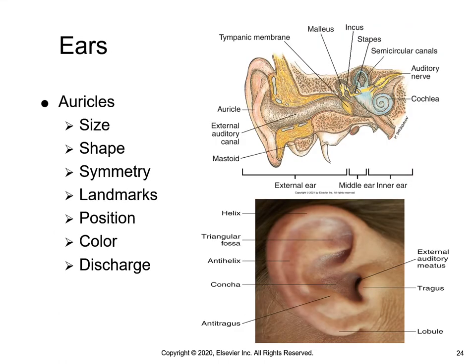When examining an ear, the nurse will look at the external ear, looking at the patient straight on to determine if the ears are the same size and length. When looking in an ear or providing medications, we need to make sure that the ear canal is straightened. For an adult and an older child, we will pull the auricle of the ear up and backward to straighten the ear canal. For an infant, the auricle should be pulled down and back to straighten the ear canal.